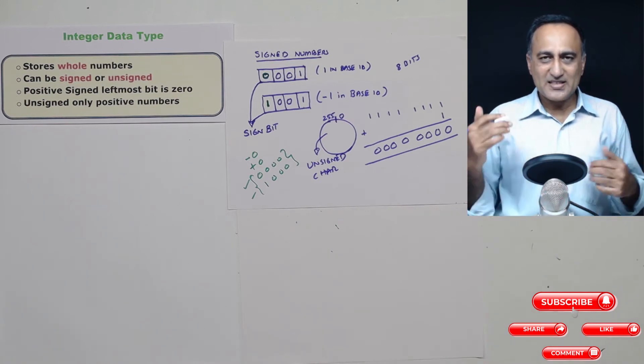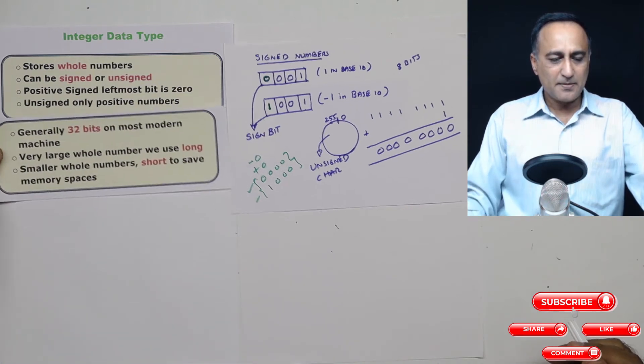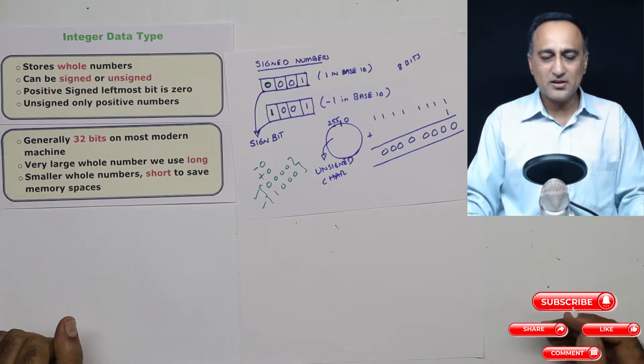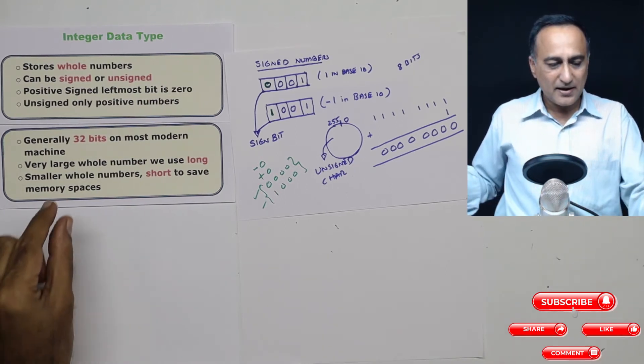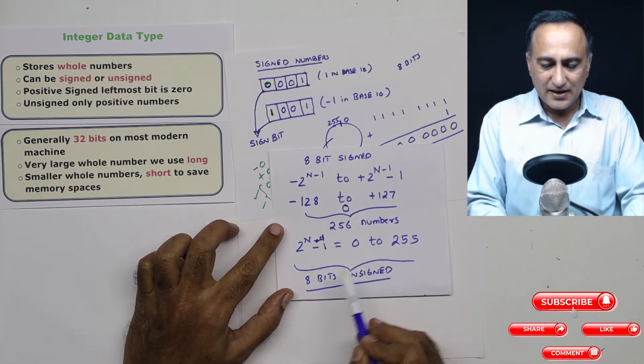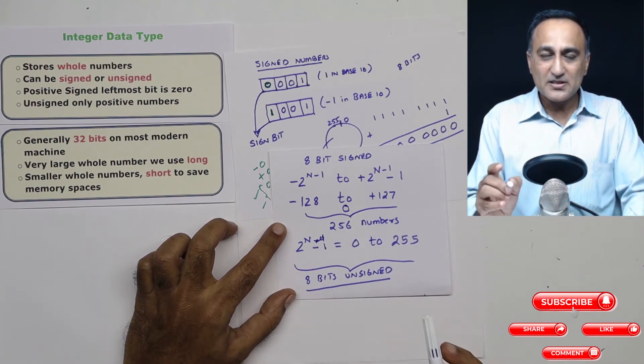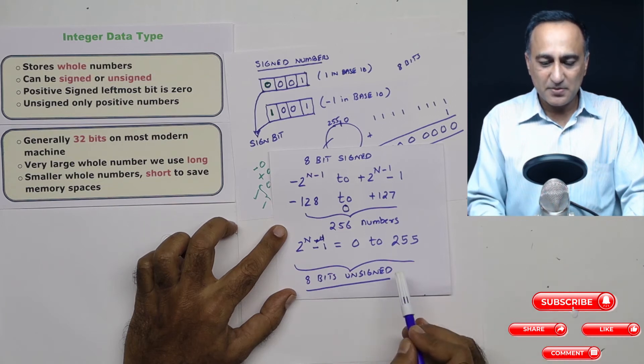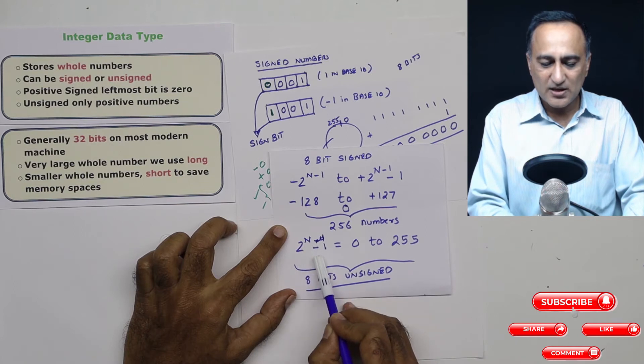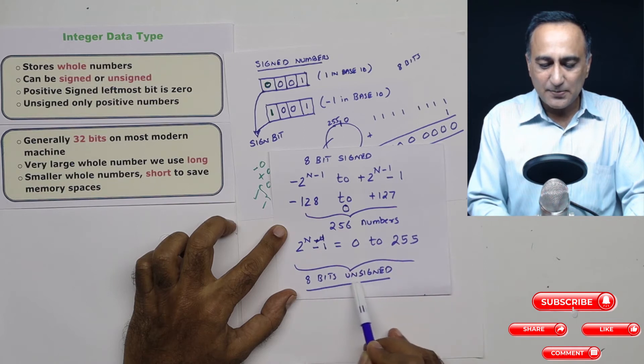Just to refresh, unsigned numbers means zero or positive numbers only. Now the integer data type on most modern machines has 32 bits or is represented using 32 bits. Let me explain what I mean by the number of bits. Suppose I have, let's say, eight bits to represent a number. In that number, if I can only represent zero or positive using eight bits, then I can represent numbers from zero to 255. And the formula is two raised to n minus one. So this is an example of an unsigned eight bit integer.